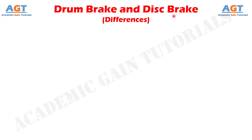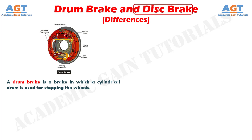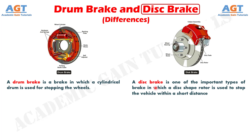A component that is used for stopping the vehicle within the shortest possible distance is called a brake. A drum brake is a brake in which a cylindrical drum is used for stopping the wheels, and it is used in heavy vehicles — you can also see it on motorcycles. On the other hand, a disc brake is one of the important types of brake in which a disc-shaped rotor is used to stop the vehicle within a short distance. It is used in light vehicles like scooters, motorcycles, cars, and so on.